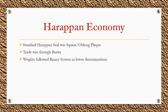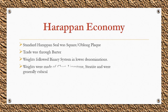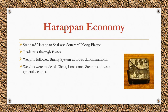The weights followed a binary system in the lower denominations — 1, 2, 8, 16, 32, 64 — and then followed decimal multiples of 160. The weights were made of chert, limestone, and steatite stones, and were generally cubical in shape.